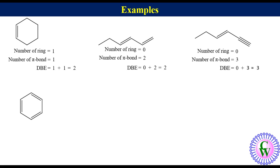Benzene. Number of ring is 1, number of pi bonds is 3. So DBE is equal to 1 plus 3 is equal to 4.